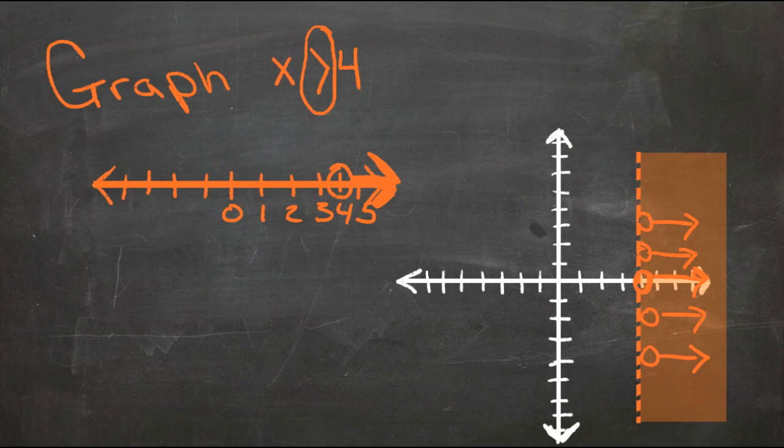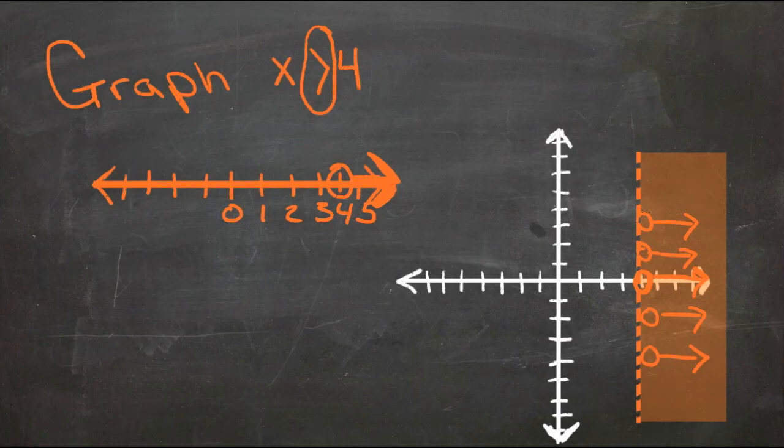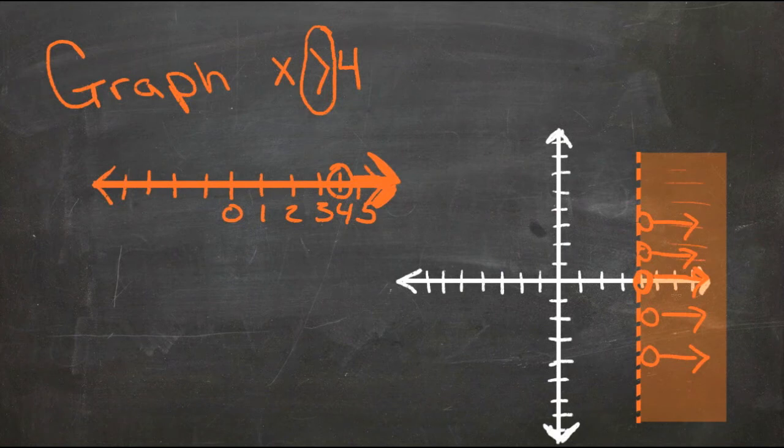By making that a dashed line, we can see that that line itself is not included, but that right up to it, as close as we want to get to it, is included. And then we shade everything to the right here to show that all of these numbers over here to the right are included.